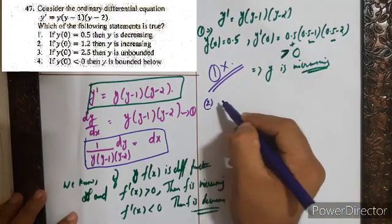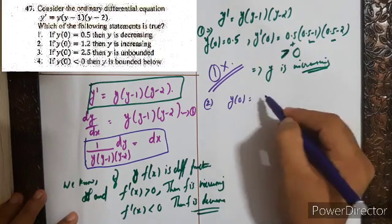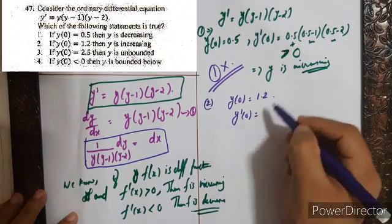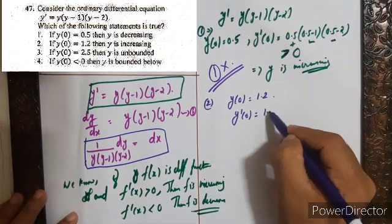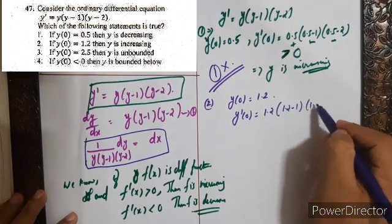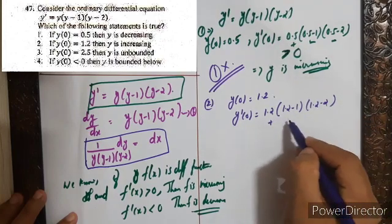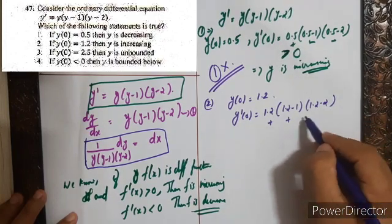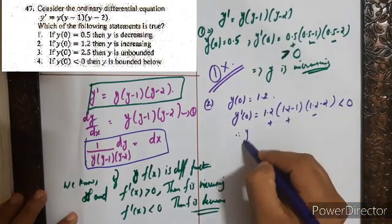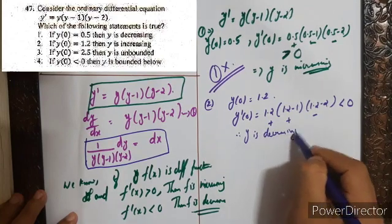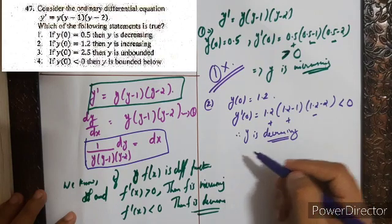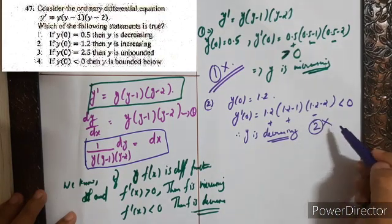For the second option, y(0) = 1.2. Then y'(0) = 1.2 × (1.2 - 1) × (1.2 - 2) = 1.2 × 0.2 × (-0.8). This is positive × positive × negative, so the product is less than 0. Therefore y is decreasing. But option 2 says y is increasing, so the second option is also false.